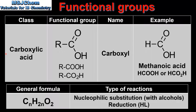Next we have the carboxylic acids. The class name is carboxylic acid and the functional group name is carboxyl. A carboxyl group is a carbon atom that has a double bond to an oxygen atom and a single bond to an oxygen which is bonded to a hydrogen. Here we have an example which is methanolic acid. Note the condensed structural formula can be written in two ways. The general formula is CnH2nO2. Carboxylic acids undergo nucleophilic substitution reactions with alcohols to produce esters. They also undergo reduction reactions which are covered in the higher level syllabus.